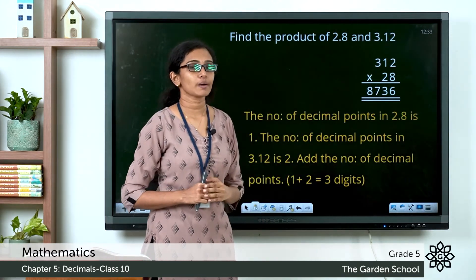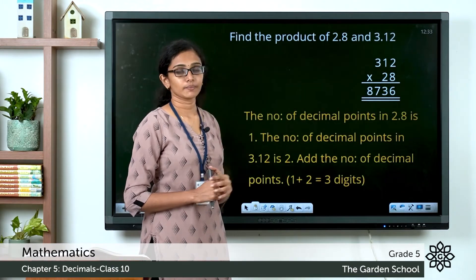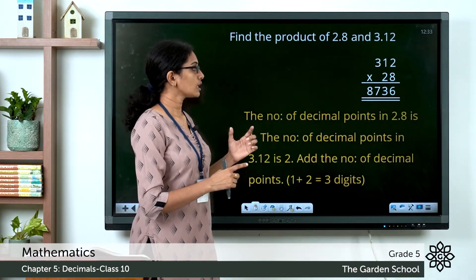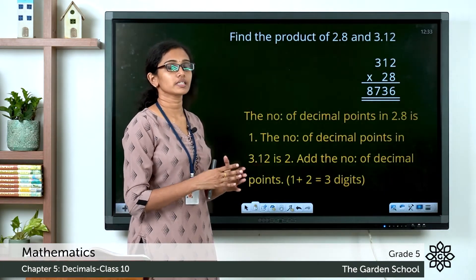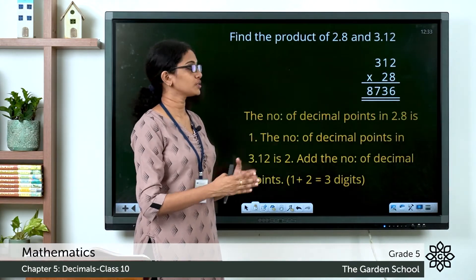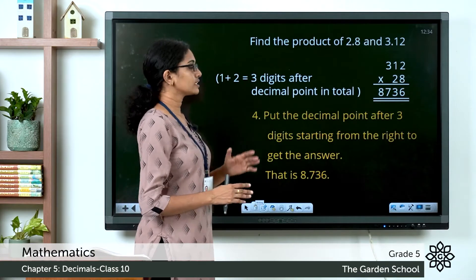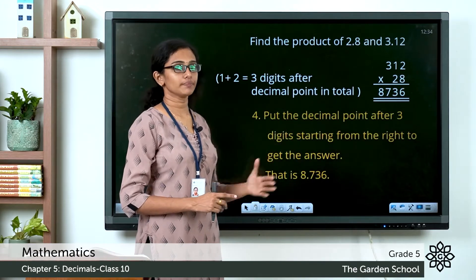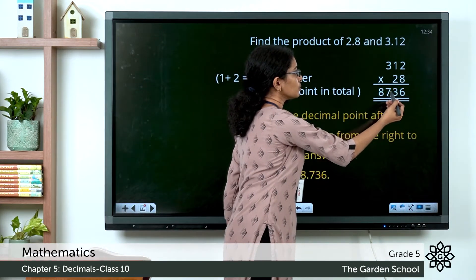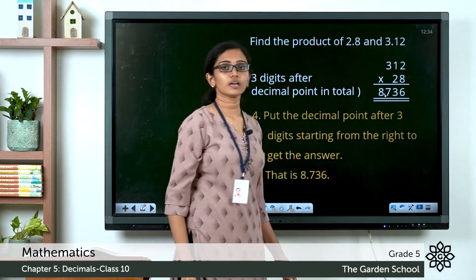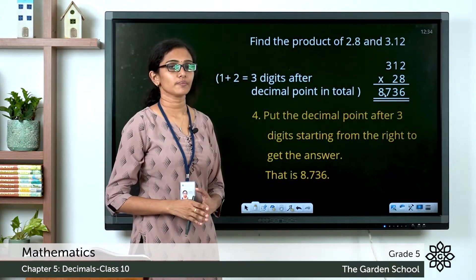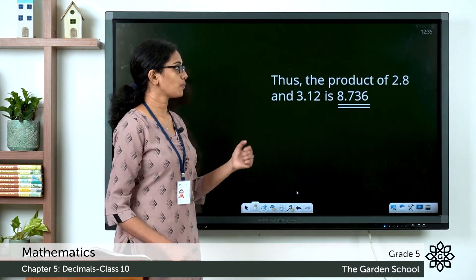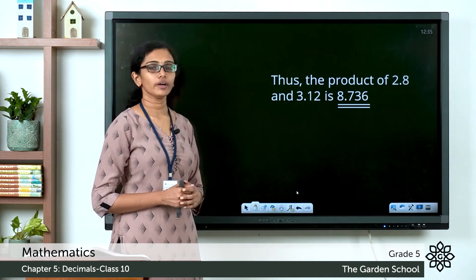You have to add the number of digits after the decimal point in the multiplier and the multiplicand. Here you have one and here you have two digits after the decimal point. Therefore the total number of digits after the decimal points is 1 plus 2, equal to 3. So count three places from right to left in the product — that would be 1, 2, 3 — and there you put the decimal point. So the final product is 8.736.